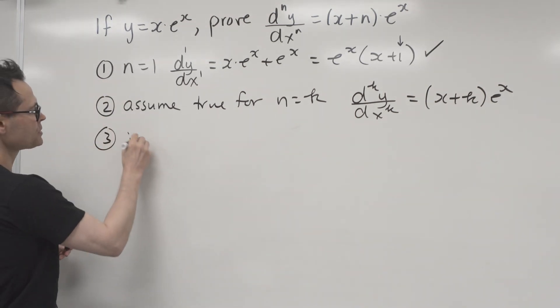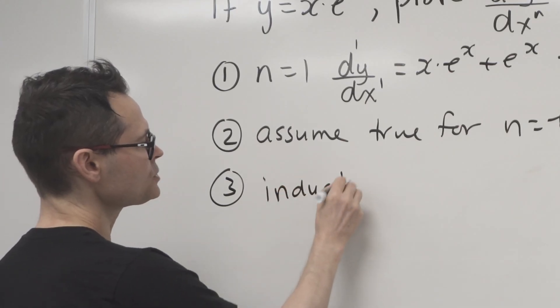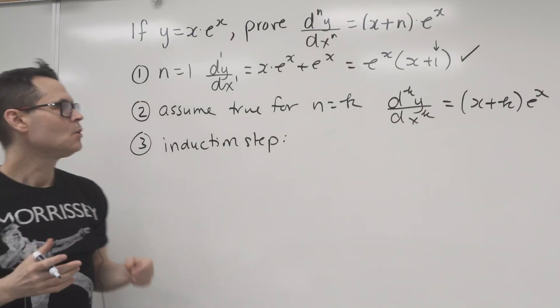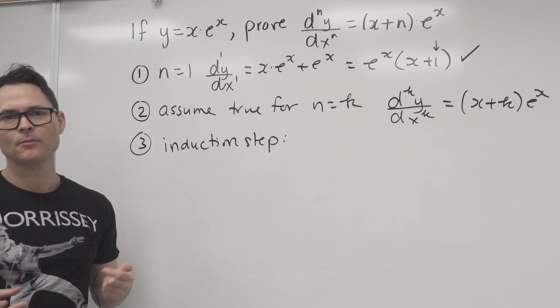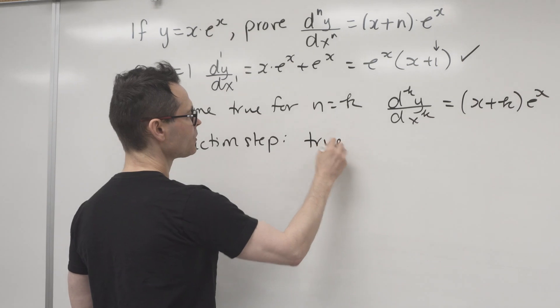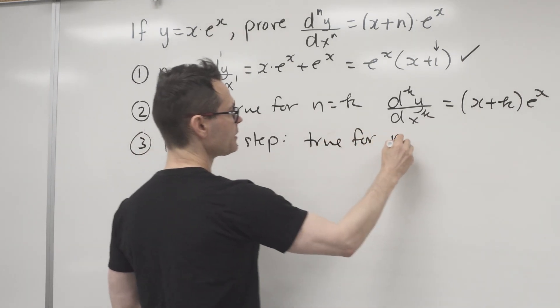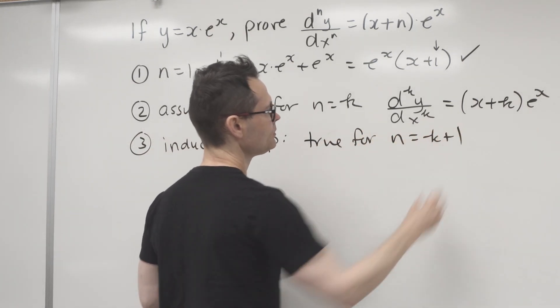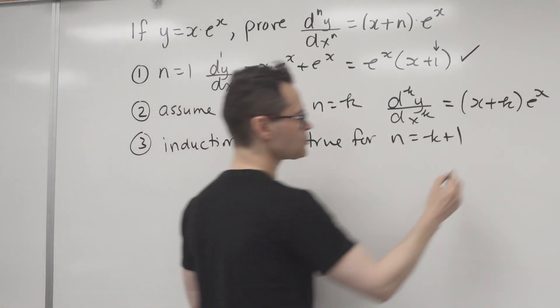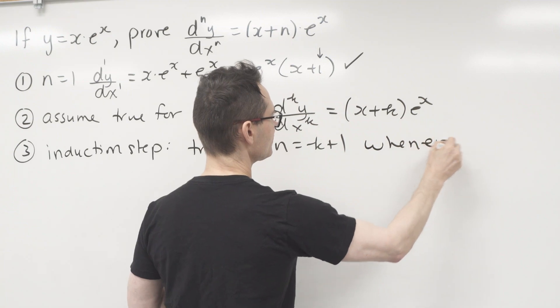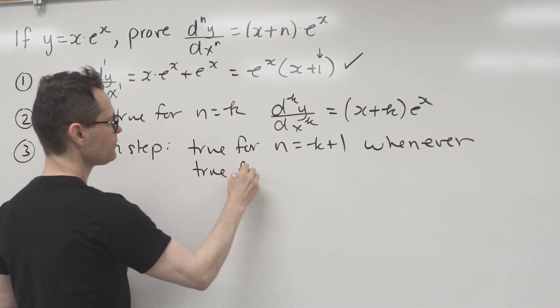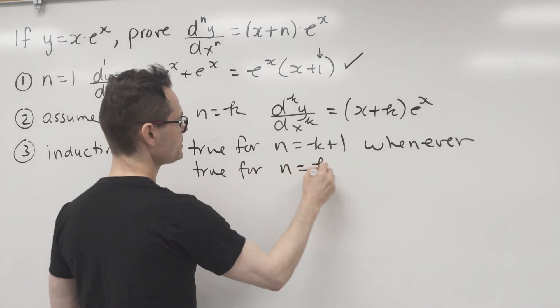This is called the induction step. And this is essentially where all of the power of induction is used. What do we want to do in this step? Well, what we want to show is that the statement is true for k plus 1, but not just on its own. We want to show it's true for k plus 1 whenever it's true for n is equal to k.